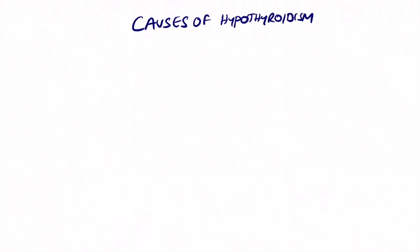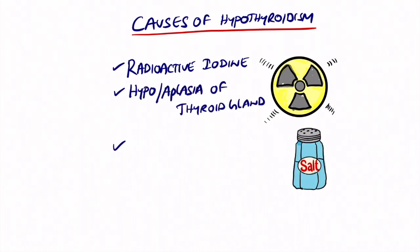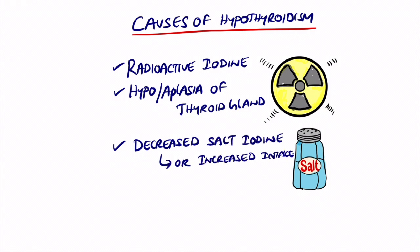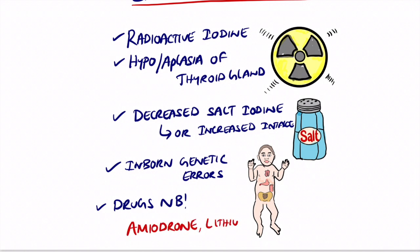What are the causes of hypothyroidism? The number one cause is radioactive iodine or radioactive sources. There is also hypoplasia of the thyroid gland, decreased or increased salt/iodine intake, inborn genetic errors, and drugs — especially amiodarone, lithium, and interferon alpha.